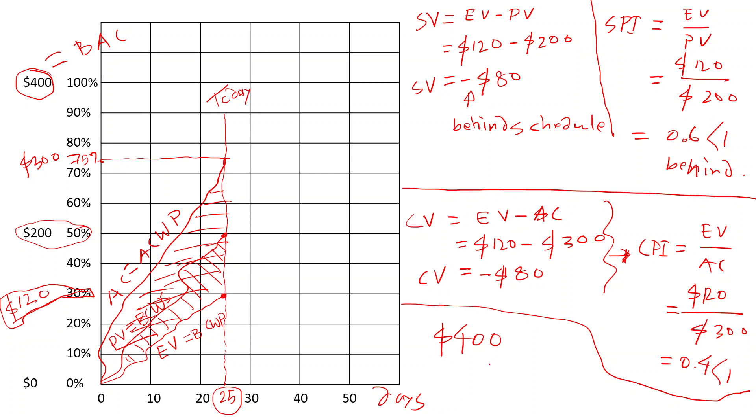A quick rough estimate of this project. If we continue at a rate of 0.4% or 40% CPI, 0.4, then it's going to be about $1,000 to complete this project. This is known as the EAC, estimated cost at completion.